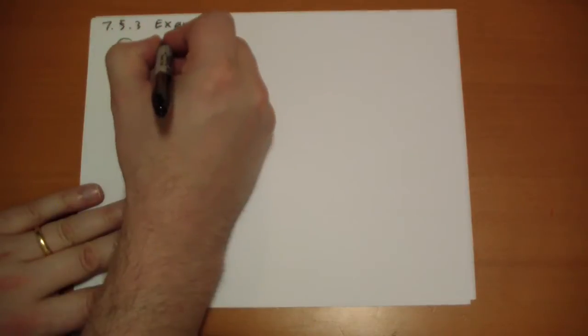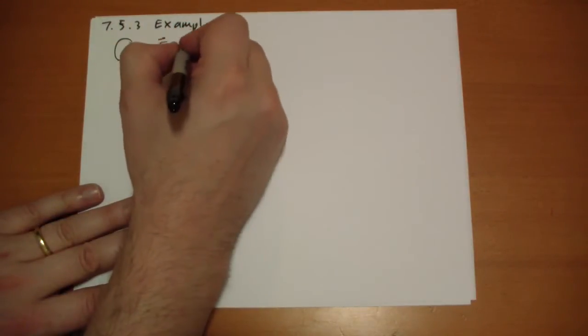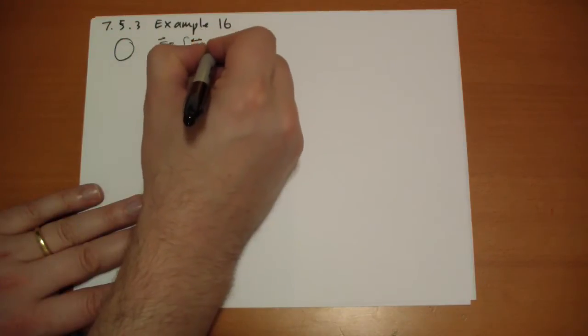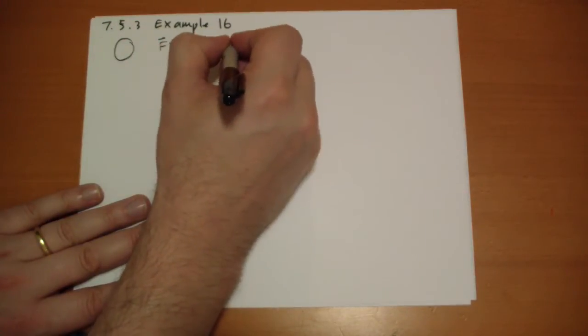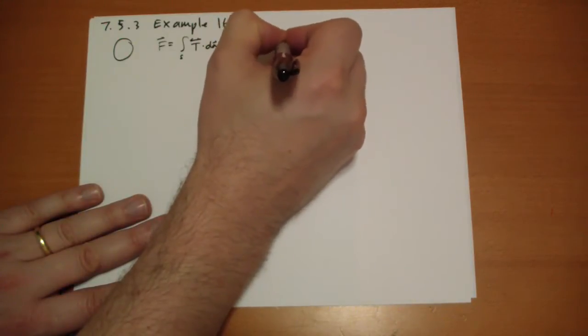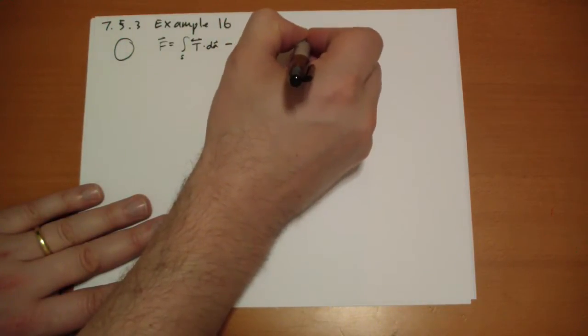And so we're going to use the formula the total force is equal to the integral along surface of the Maxwell stress tensor dot dA vector minus epsilon naught mu naught, the volume integral of the derivative of the S vector d tau.